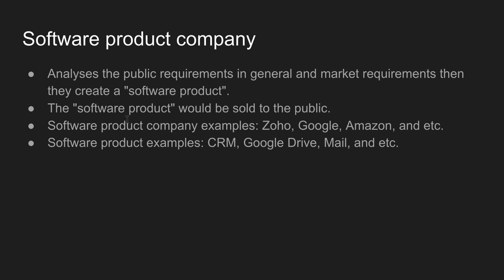What is a software product company? It analyzes the public requirements in general. They analyze the market trend, the market future, and analyze software products accordingly. Then they sell the products to the public. This is the software product company.